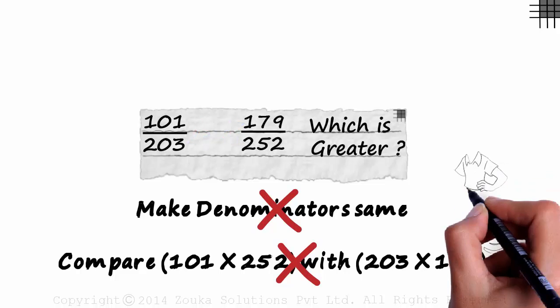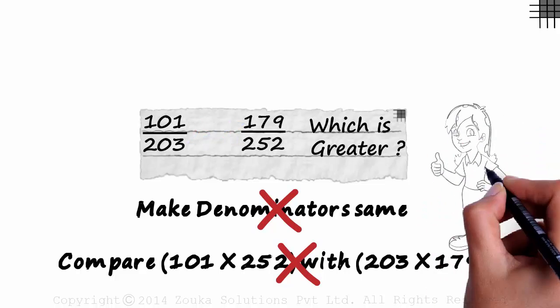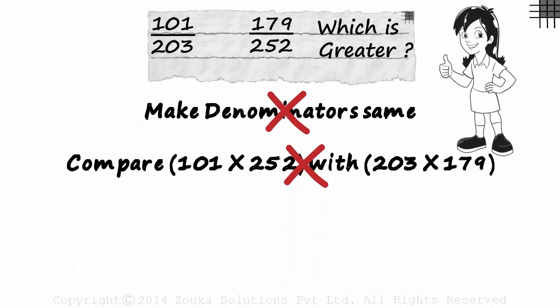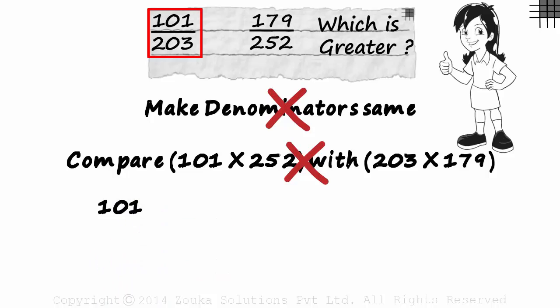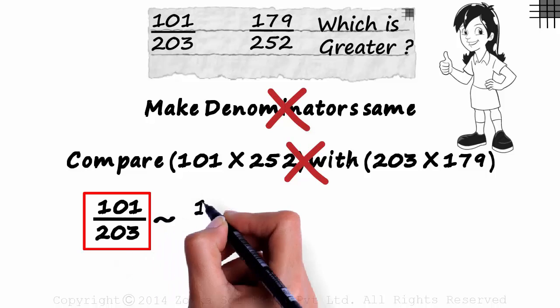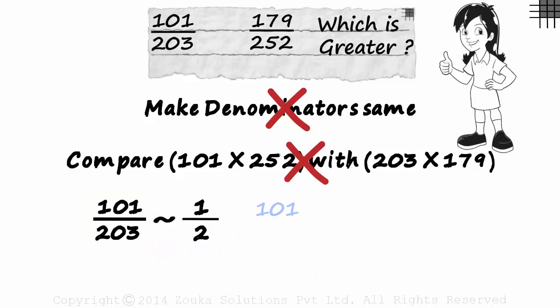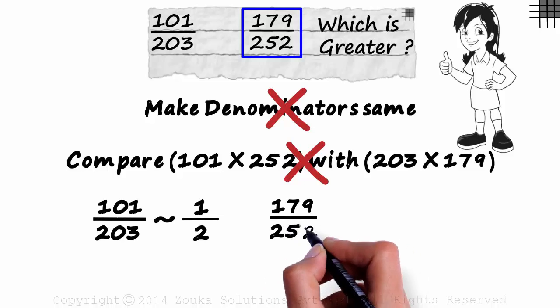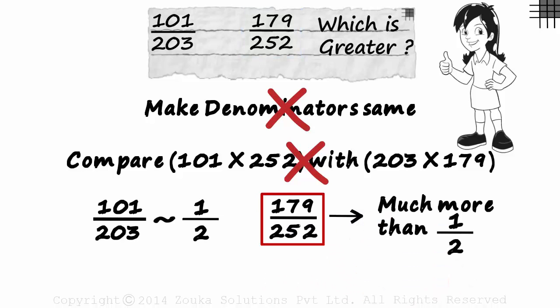Competitive exams rarely test your computation abilities. They test your ability to choose the best way and solve the problem in very little time. Look at the first fraction, 101 by 203. This value approximately equals 1 by 2. 101 by 202 would be exactly half, but this, as we can see, is approximately half.